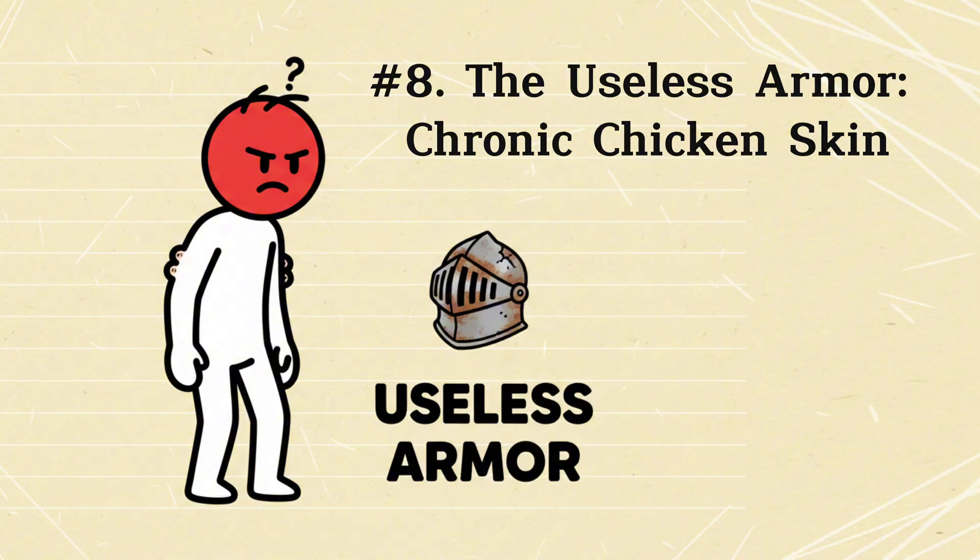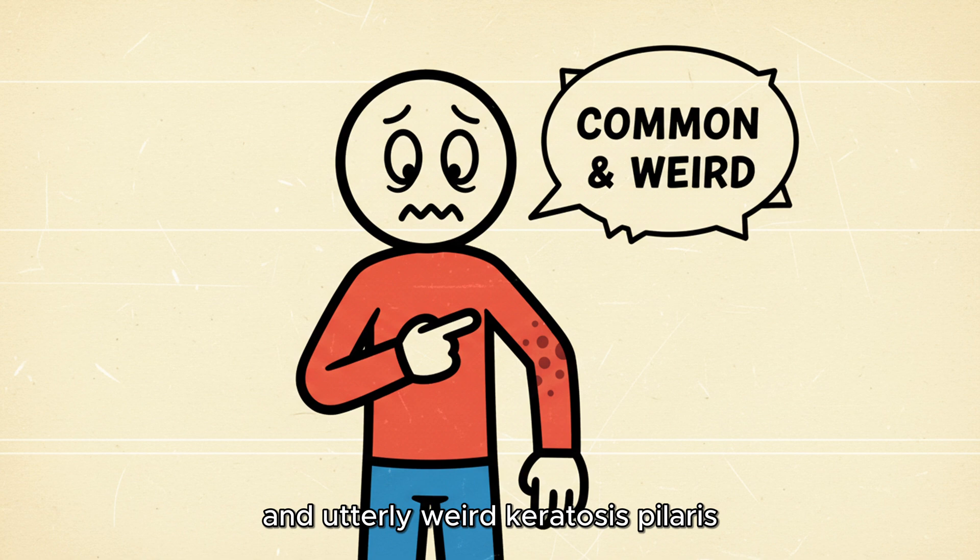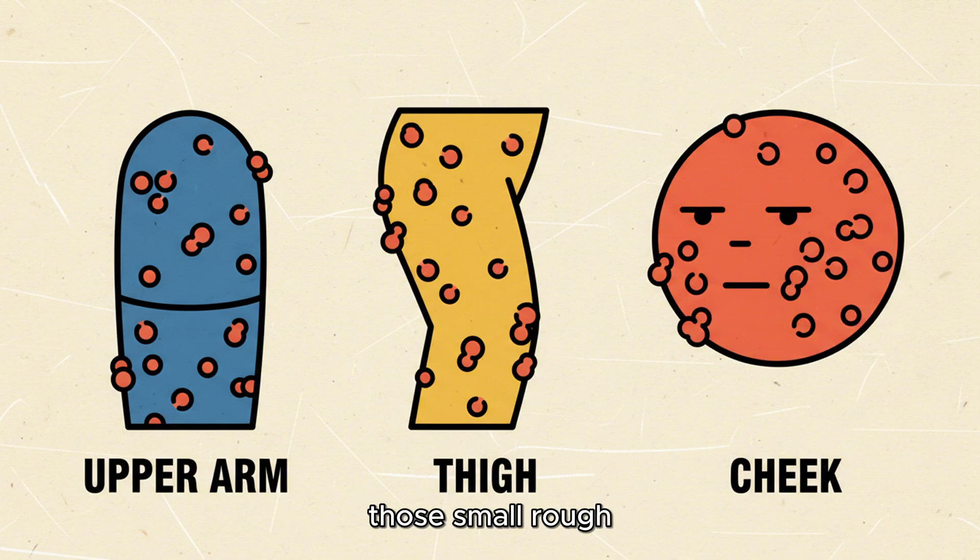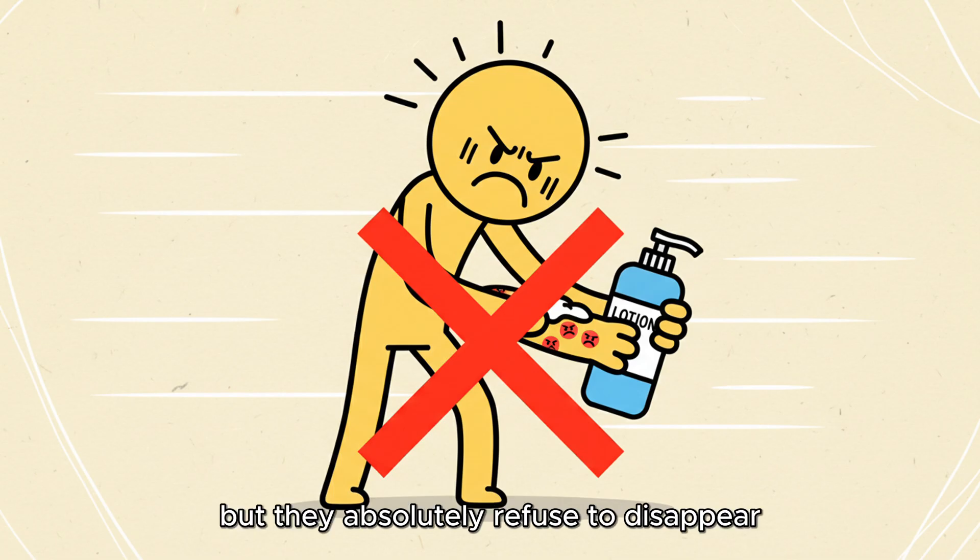Number 8. The Useless Armor, Chronic Chicken Skin. We're kicking off with something utterly common and utterly weird, keratosis pilaris, or what most of us call chicken skin. Those small, rough bumps that tend to cluster on the backs of your arms, your thighs, or your cheeks. They aren't harmful, but they absolutely refuse to disappear, no matter how much lotion you use.